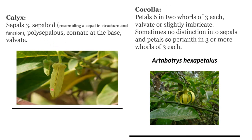Calyx: sepals 3, sepaloid — resembling a sepal in structure and function — polysepalous, connate at the base, and valvate in aestivation. Corolla consists of 6 petals in 2 whorls of 3 each. Valvate or slightly imbricate in aestivation. Sometimes there is no distinction into sepals and petals, so perianth is in 3 or more whorls of 3 each.